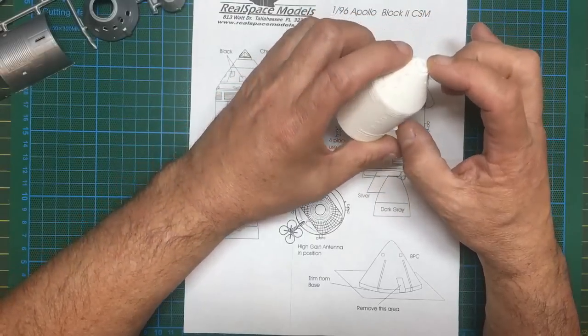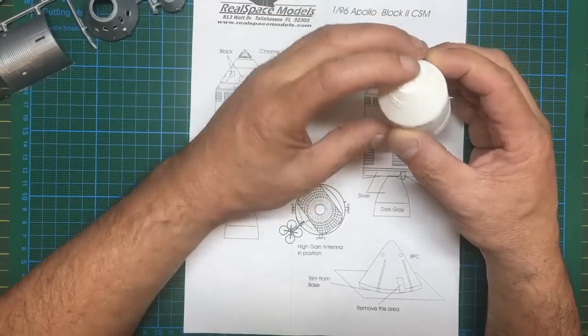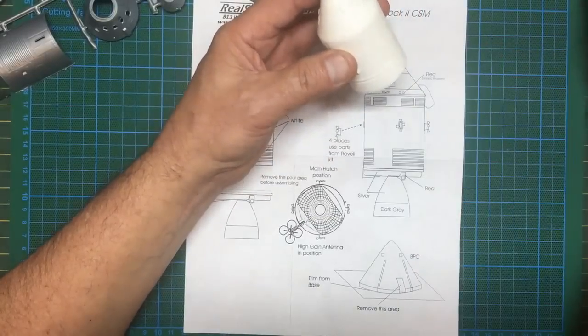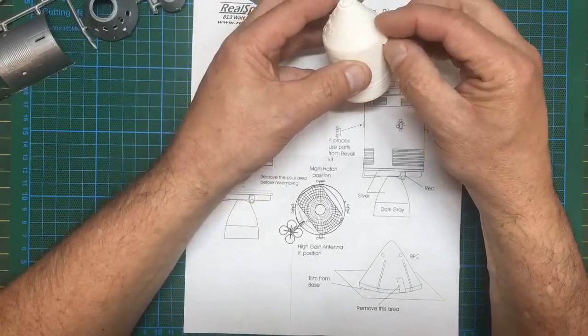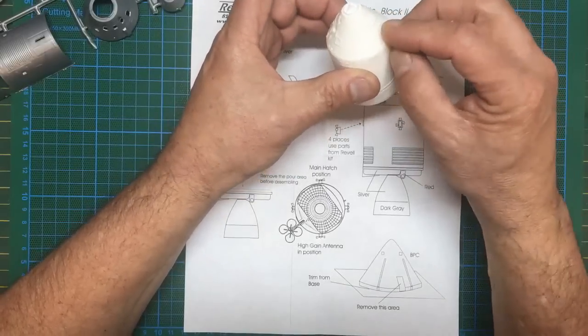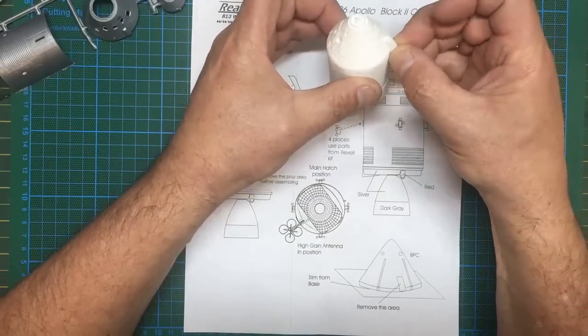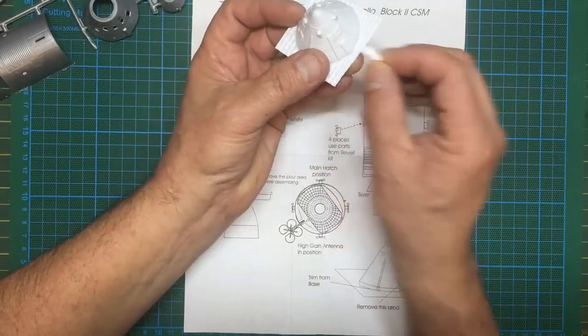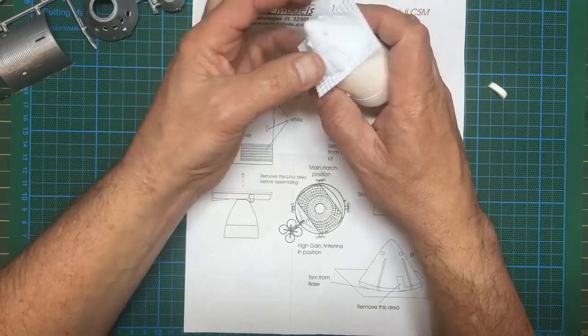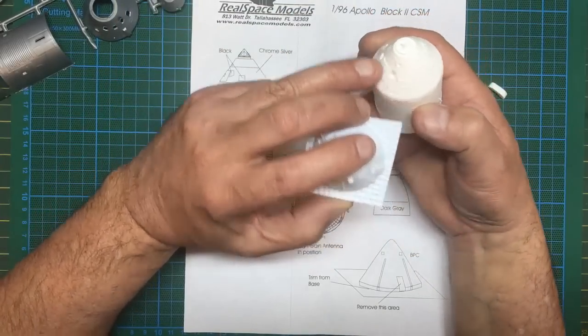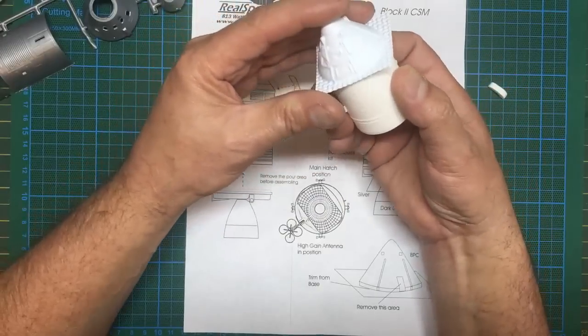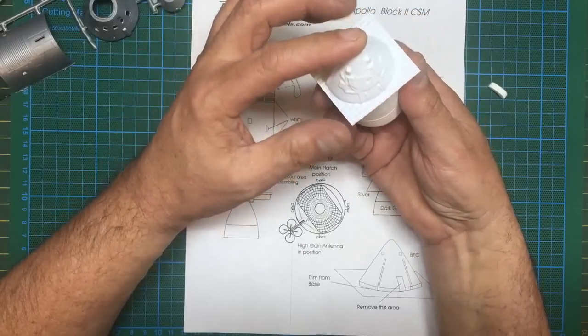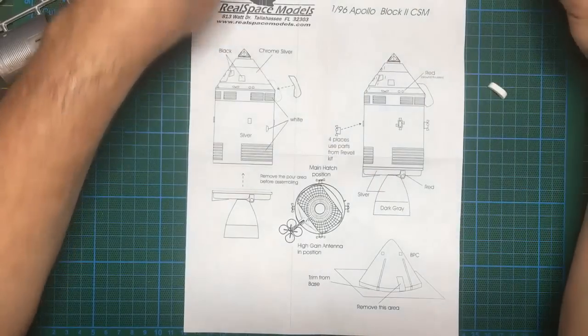That's basically your command module and service module with the detail on the front there, which is correct with the correct rails and doors and everything. Then we've also got here this location where our conduit goes, so that'll clip on over there, just glue on with some superglue. It's a nice fit even before it's cleaned up. Then you've got your boost protective cover here. You have to cut this area out and that's going to go over that and fit on here. You can see you've got the covers for the relevant areas all matching on your vac-formed piece of plastic there.